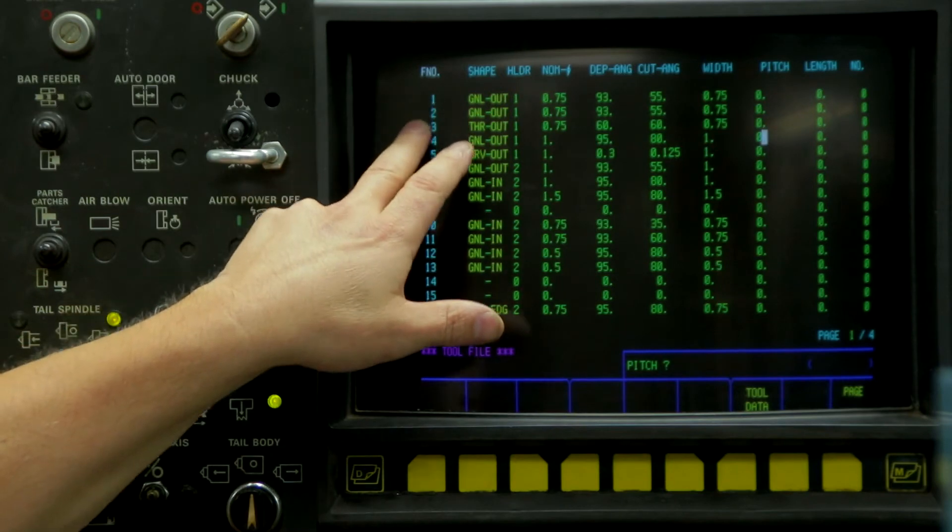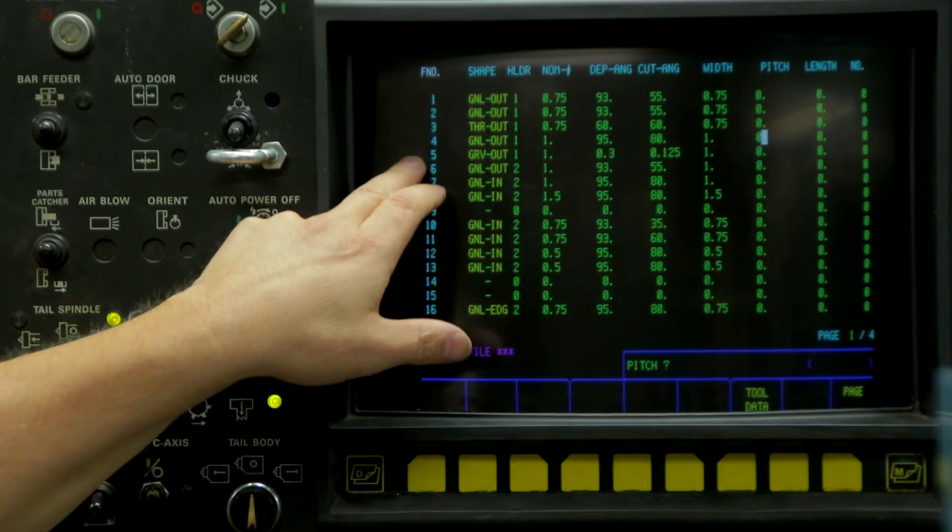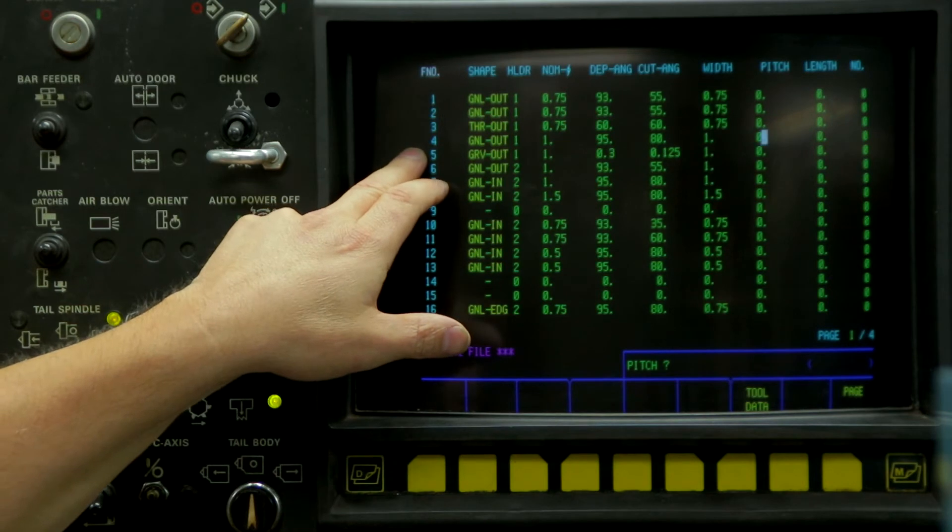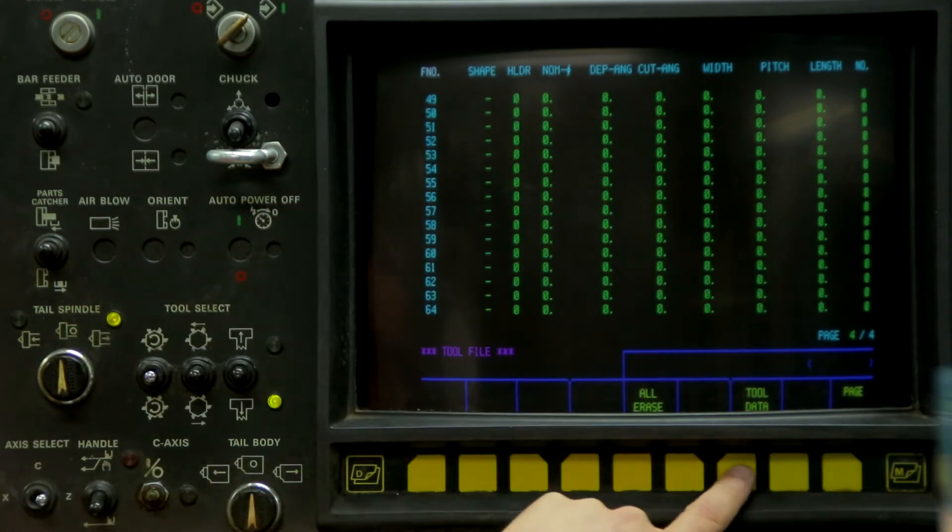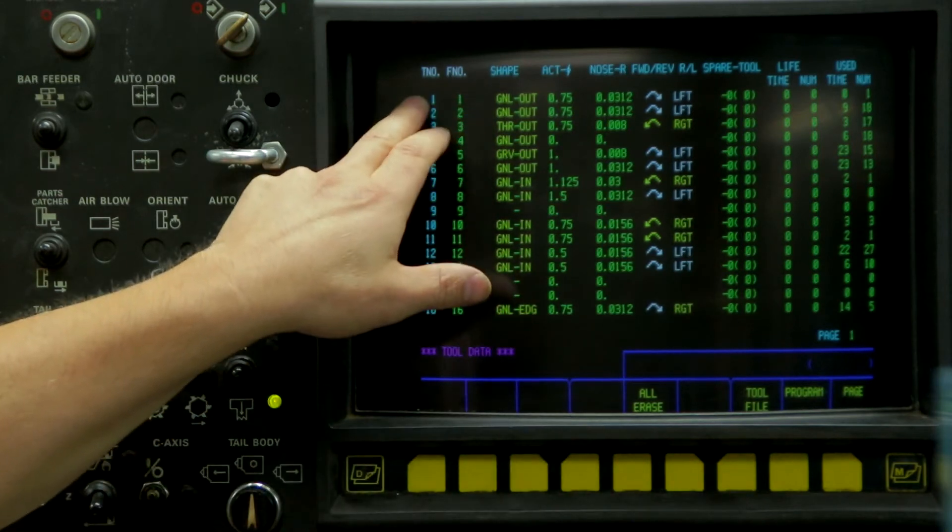So now this is F number, which is the file number. So we're going to go to the page, go to the tool data.